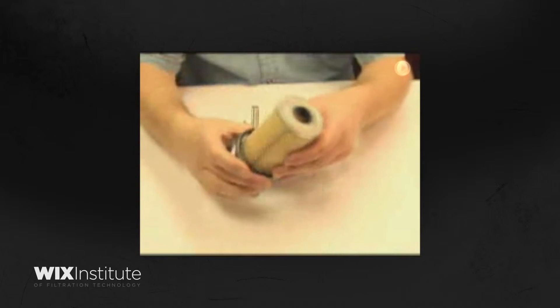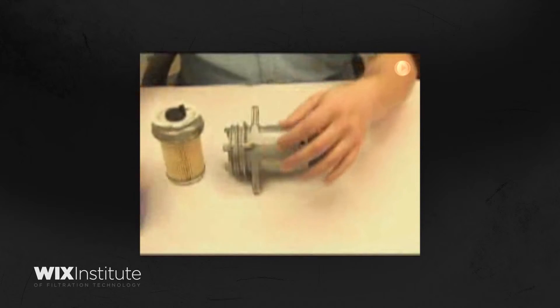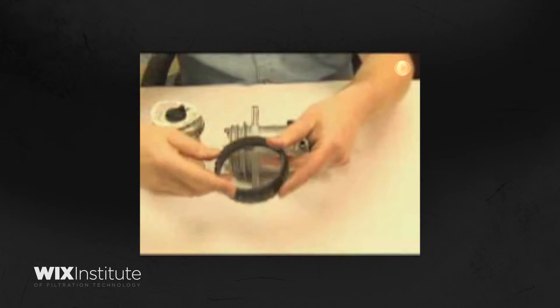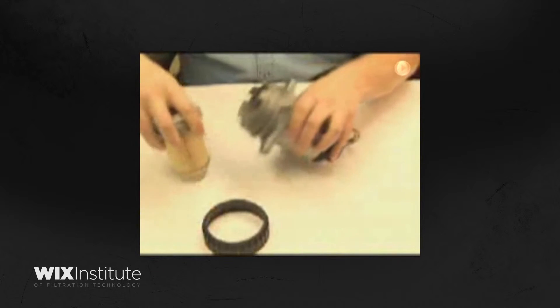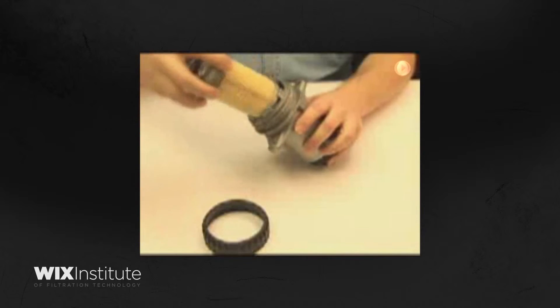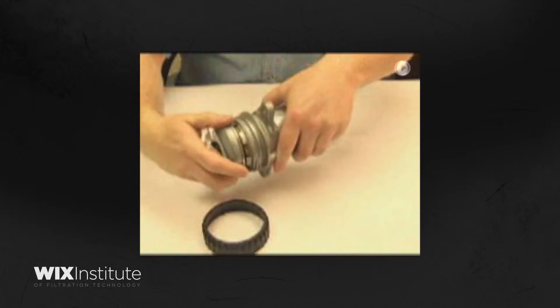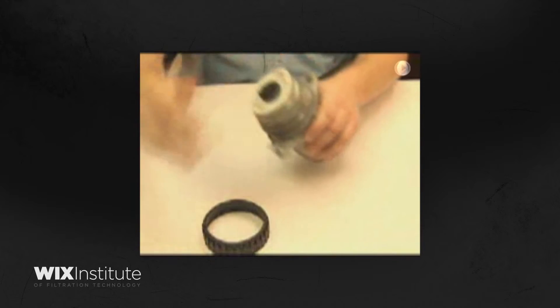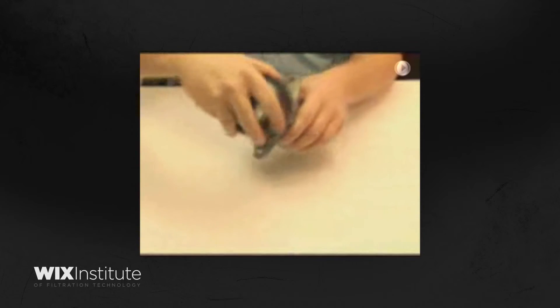Let's install the previous design filter into the housing. If we take a look, we see that the gasket is retained by the filter. We also see that a retainer ring is required to hold the filter in the housing. Now, we insert the filter into the housing and thread on the retainer ring, being careful not to cross the threads.